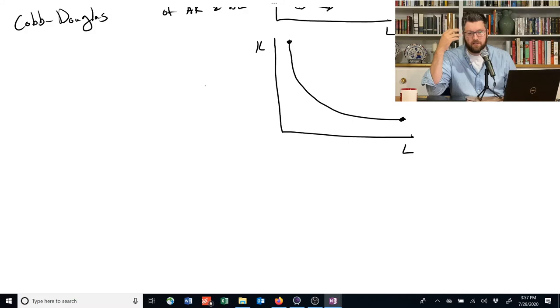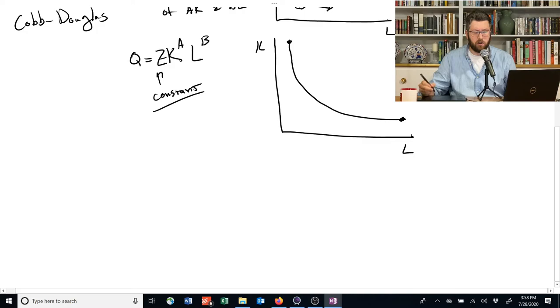The Cobb-Douglas production function looks like this. We have capital raised to some power, or alpha, and labor multiplies it, also raised to some other power. And typically there might even be some third term out here in front. I'll call it Z. It's just some constant. And we're going to work a lot with these.